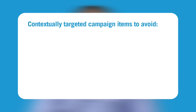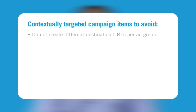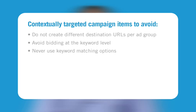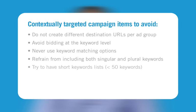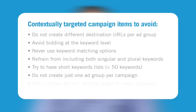When creating a contextually targeted campaign, try not to do the following: do not create different destination URLs per ad group; avoid bidding at the keyword level; never use keyword matching options; refrain from including both singular and plural keywords; try to have short keyword lists with less than 50 keywords per ad group; do not create just one ad group per campaign; and don't choose generic landing pages for each ad group.